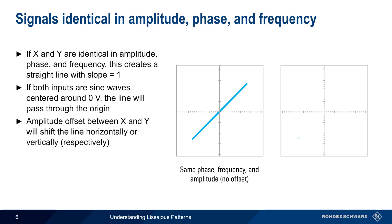Any amplitude offset between X and Y will shift the line horizontally or vertically. It's worth noting that the length of this line is controlled by the volts per division setting for each channel.